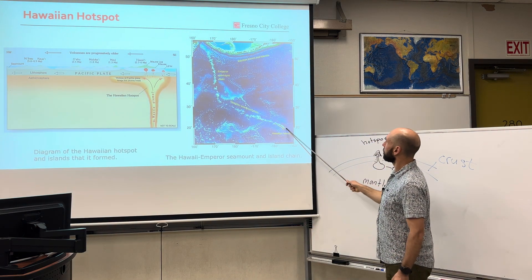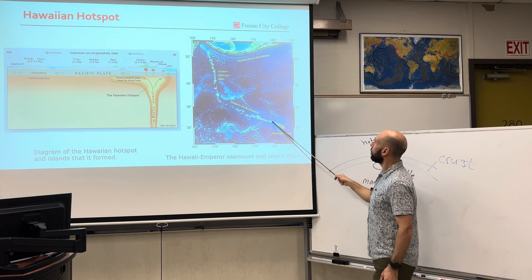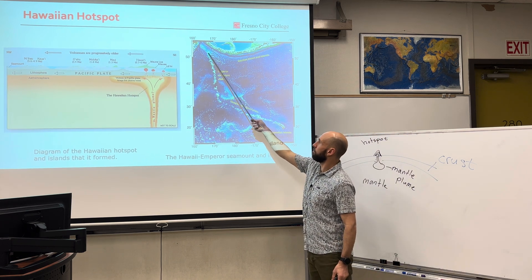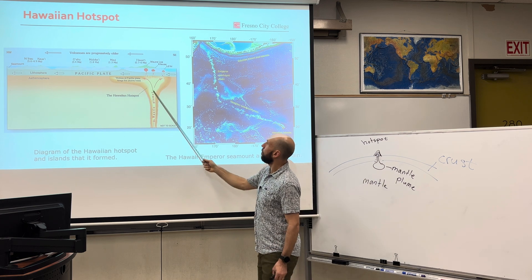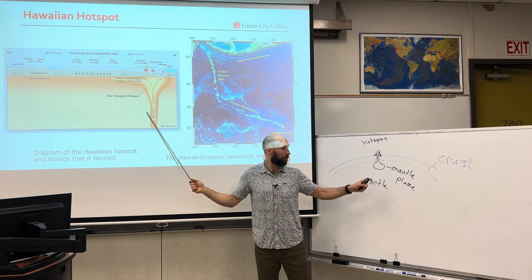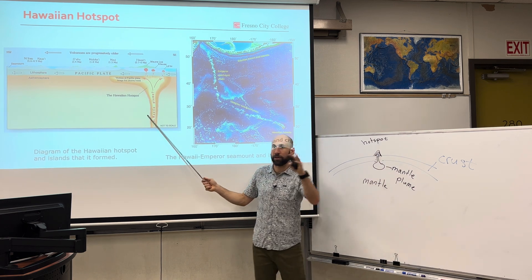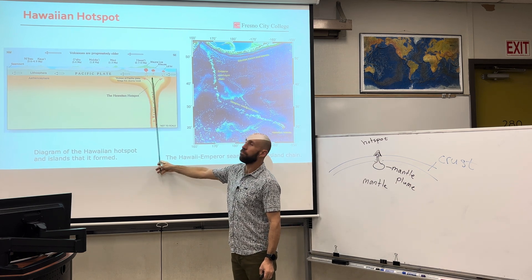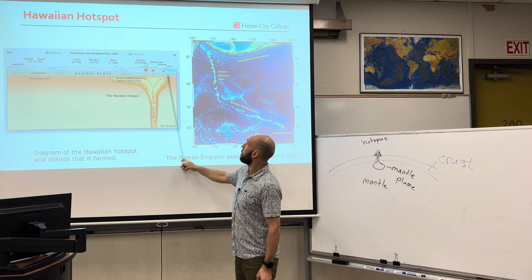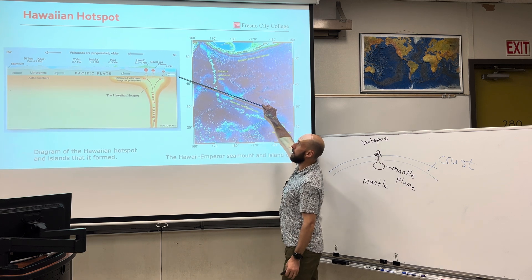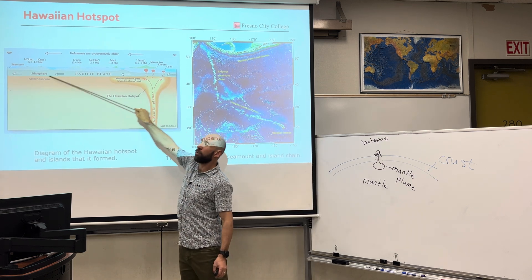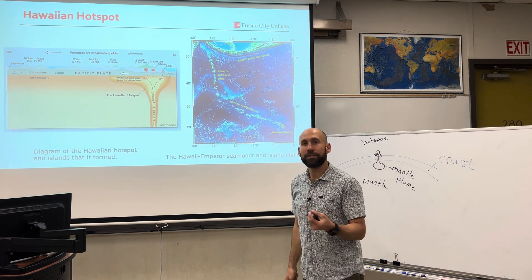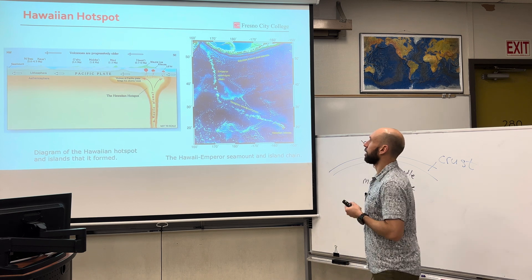Here are the Hawaiian islands, here's the Hawaiian Seamount chain, and here's the Emperor Seamount chain. The Hawaiian hotspot — the mantle plume does not move. The Pacific plate is moving. This is another one of our supporting lines of evidence that help give us confidence in the theory of plate tectonics.